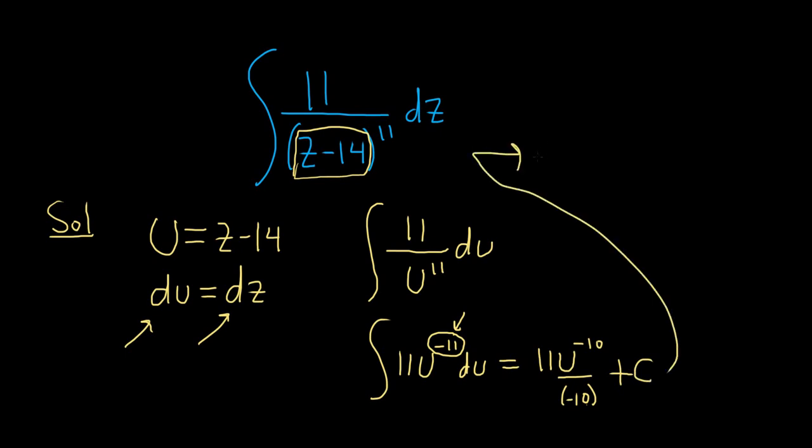Running out of room, I'll come up here. This is equal to negative 11 tenths. And let's bring this u back downstairs to make it positive. So 1 over u to the 10th, beautiful stuff, plus c.